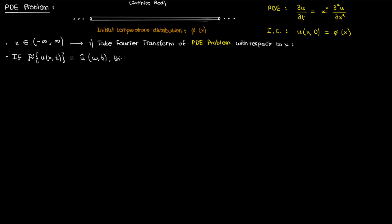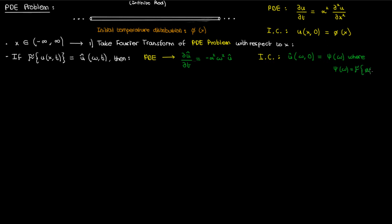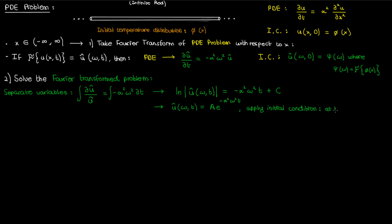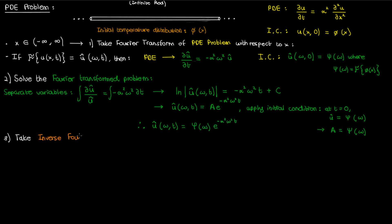Assuming the Fourier transform of u is u-hat of omega,t, the Fourier transform of the PDE gives ∂u-hat/∂t = −α²ω²·u-hat, applying the first and second properties discussed earlier. The Fourier transform of the initial condition gives a function ψ of omega, the Fourier transform of φ of x. The next step is to solve this Fourier-transformed problem. The first-order ODE in t is solved by separation of variables: dt goes on the right and u-hat on the left. Integrating both sides and exponentiating gives u-hat = A·e^(−α²ω²t). Applying the initial condition at t=0 gives A = ψ of omega, so the solution is u-hat of omega,t = ψ(ω)·e^(−α²ω²t). Now we move to step three: taking the inverse Fourier transform.